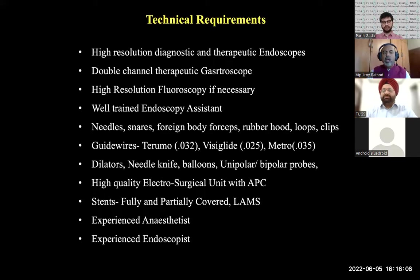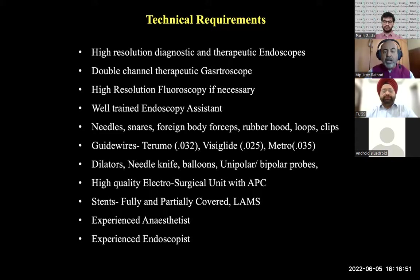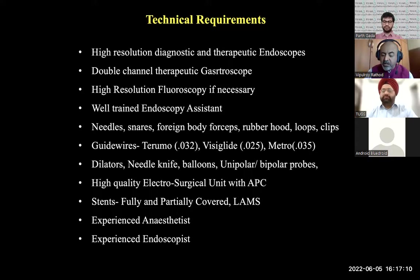As an endoscopist you need high-resolution diagnostic and therapeutic scopes, possibly a double-channel therapeutic gastroscope for very massive bleeds, high-resolution fluoroscopy in some cases, and a well-trained endoscopy assistant. Accessories include needles, snares, foreign body forceps, rubber hood, loops, clips, guide wires, dilators, needle knife, unipolar and bipolar probes, electrosurgical unit, APC, and stents. Stents are used in intractable GI bleed or variceal bleed temporarily — though rarely needed if proper therapeutic intervention is done. Experienced anesthetists, including pediatric anesthesiologists, and experienced endoscopists are essential.